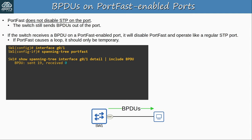Let's look at error-disable and how a port can recover after being disabled by BPDU Guard. If a BPDU Guard-enabled port receives a BPDU, the port enters the error-disabled state. You'll see messages: 'Received BPDU on port G0/1 with BPDU Guard enabled, disabling port' and 'BPDU Guard error detected on G0/1, putting G0/1 in error-disable state.' Confirm with 'show interface' — G0/1 shows as error-disabled. Use 'show errdisable detect' to view which causes error-disable detection is enabled for; it's enabled for all causes by default, including BPDU Guard.